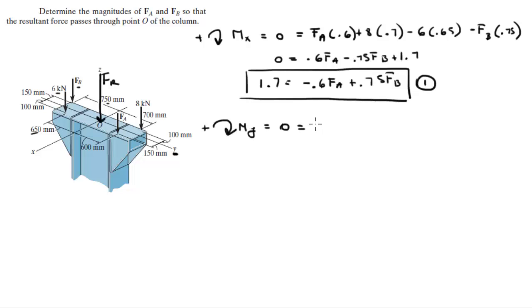When you add up the moments: 8 times 0.1—this is this 8 times 0.1—plus FB times 0.15, this is FB times 0.15, minus FA times 0.15—it's negative because it's going the other way—and minus 6 times 0.1, this one times 0.1.